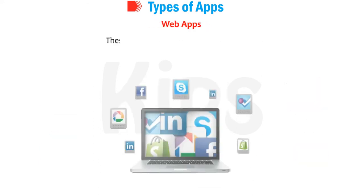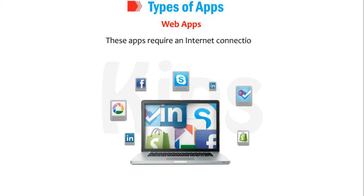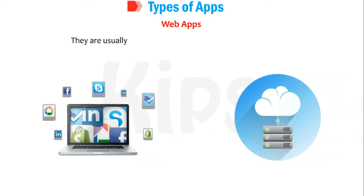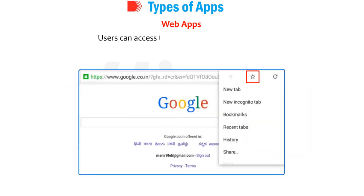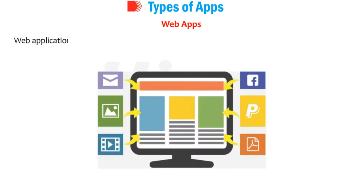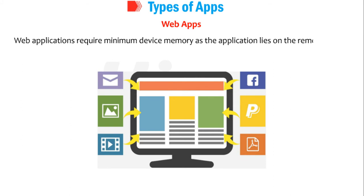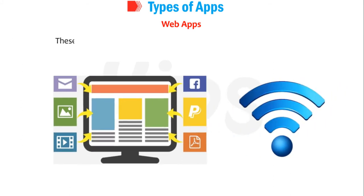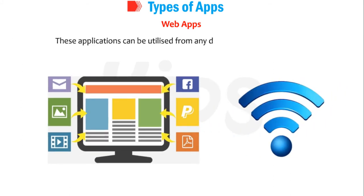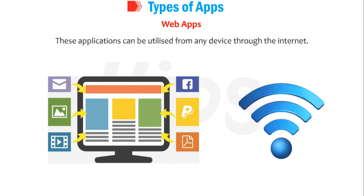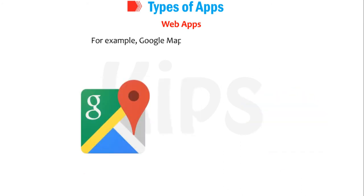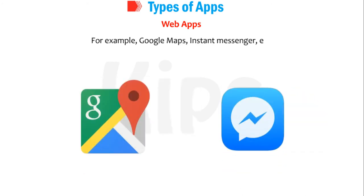Web apps require an internet connection. They are usually browser-based and stored on a remote server. Users can access them like any other web page. Web applications require minimum device memory as the application lies on the remote server. These applications can be utilized from any device through the internet. For example, Google Maps, Instant Messenger, etc.